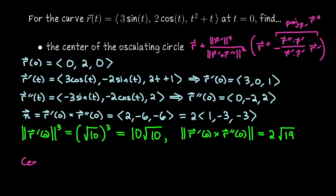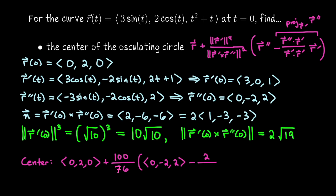With our computed values: r(0) = (0, 2, 0); |r'|⁴ = (√10)⁴ = 100; |r' × r''|² = (2√19)² = 76; r''(0) = (0, −2, 2); r'' · r' = 0·3 + (−2)·0 + 2·1 = 2; r' · r' = 10; and r'(0) = (3, 0, 1). Plugging these in and crunching the numbers, the center of the osculating circle is at (−15/19, −12/19, 45/19).